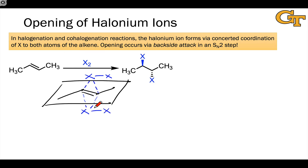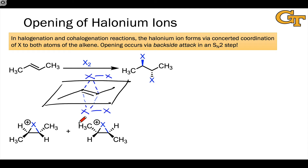These two directions of approach lead to enantiomeric halonium ions, and we can see this if we draw the curved arrows and follow the stereochemical course of the reaction, and in particular the configurations of these new stereocenters that develop on the alkene carbons. Based on the way we drew these directions of approach, top approach — which I'll label A — leads to this enantiomeric halonium ion.